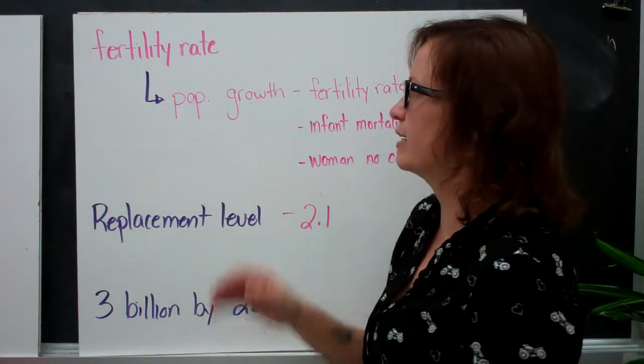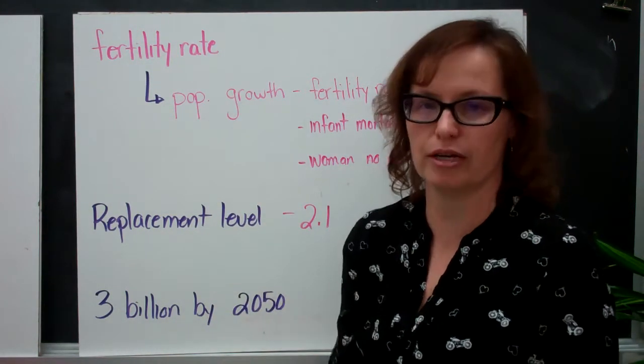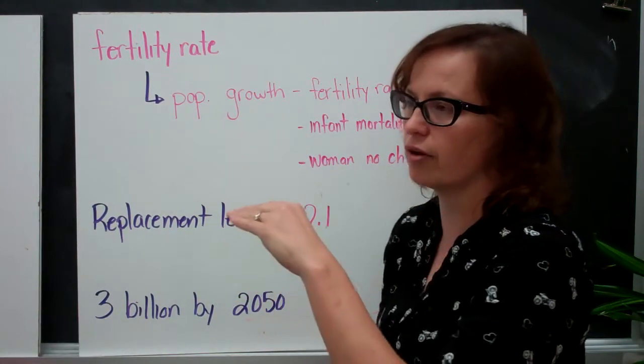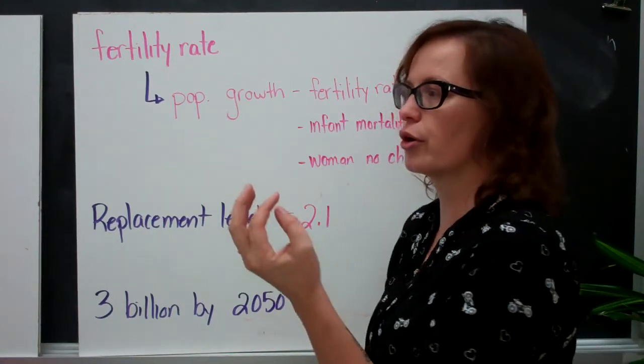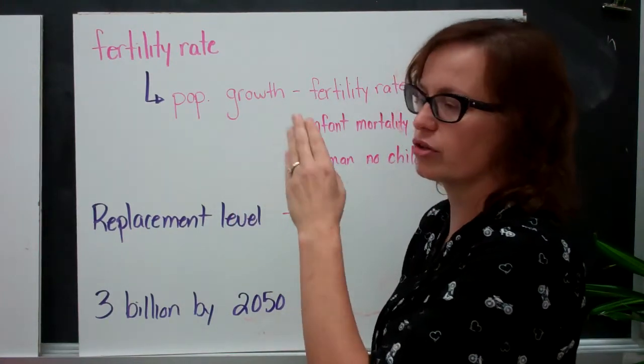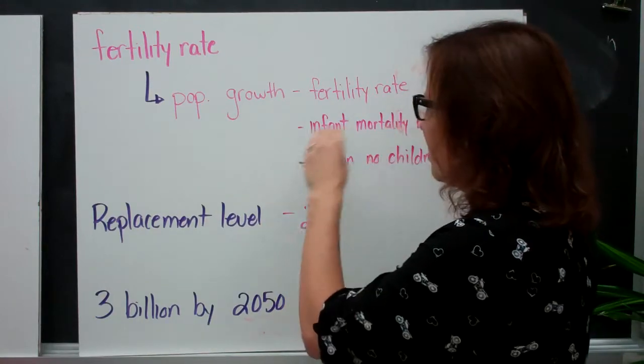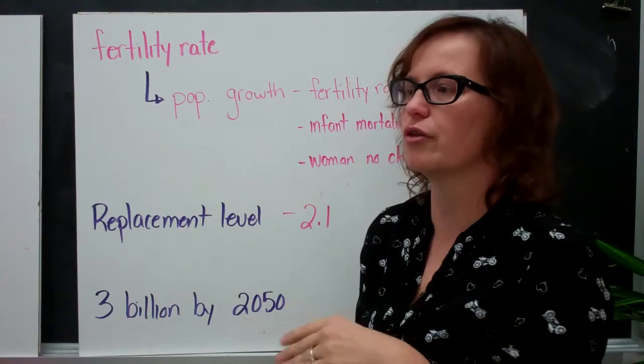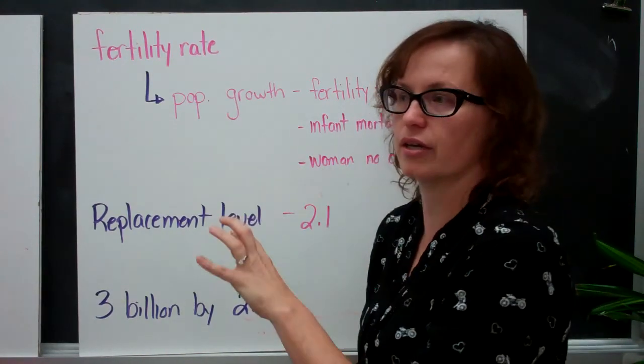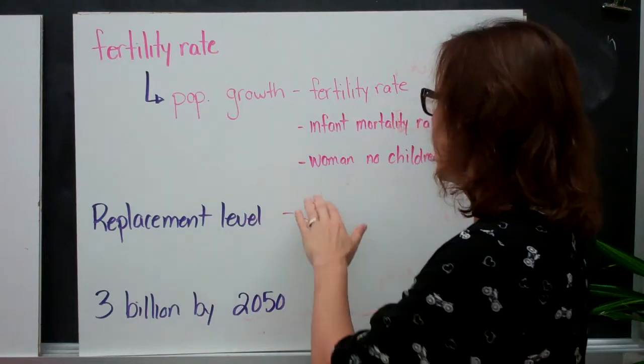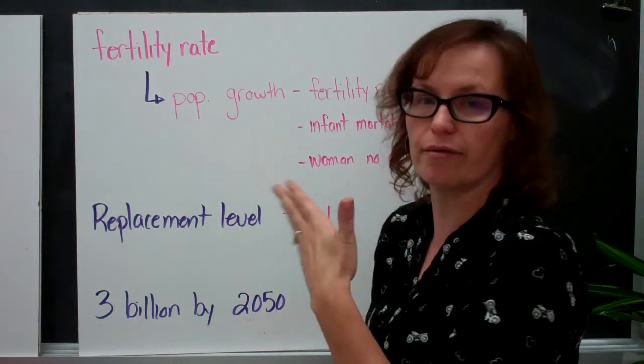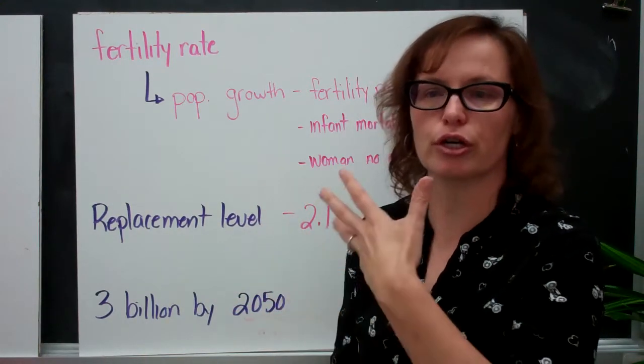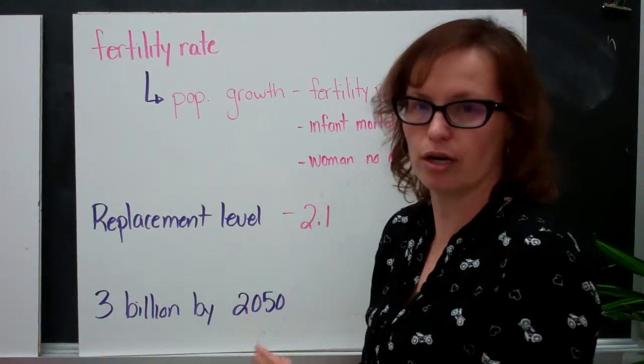So also they can take into consideration fertility rate. So this is related to population growth. So fertility rate is the amount of babies that are being born per women of a certain age every single year. And then they take into consideration infant mortality rate, so children under the age of one who pass away would be considered an infant mortality rate, and then women who don't have children. So all of that comes into play to determine how many children are being born in a country over a certain period of time.